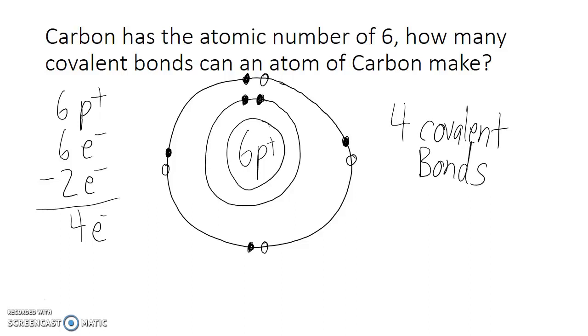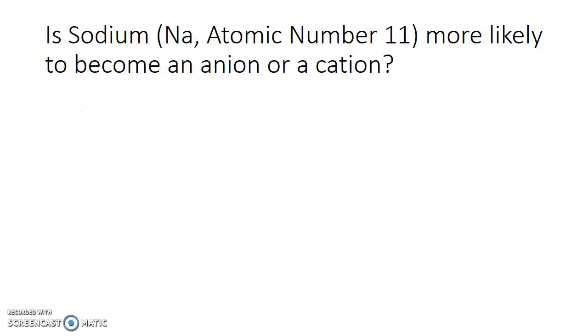So, let's look at a new problem. Is sodium, which has the chemical symbol of Na and the atomic number of 11, more likely to become an anion or a cation? So a few things we need to understand in order to answer this question. Anions are negatively charged ions, whereas cations are positively charged ions. So how do we figure out if sodium is going to be a positive or a negatively charged ion?